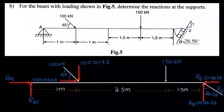For the beam with loading shown in the figure, determine the reactions at the supports. There are two supports. If A is a pin support, the reactions are a single inclined force with components RAx and RAy in two directions.